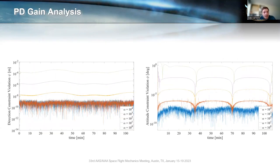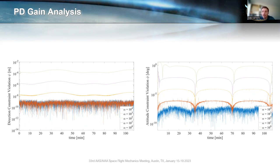For the PD formulation, we did some gain analysis because choosing appropriate gains is important. The left plot shows translational constraint violation and the right plot shows rotational constraint violation, both using the rigid constraint. As we increase the gains, we get better performance — lower constraint violations. However, at some point around gains of 10³, the results plateau and increasing the gains doesn't really improve performance further. We suspect this is due to numerical errors or integration limitations.